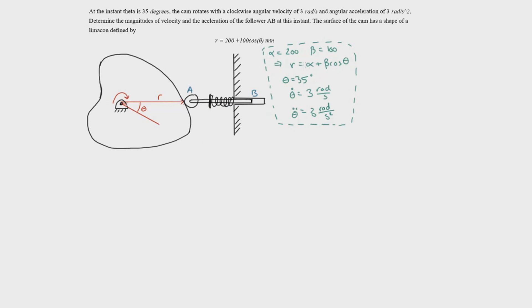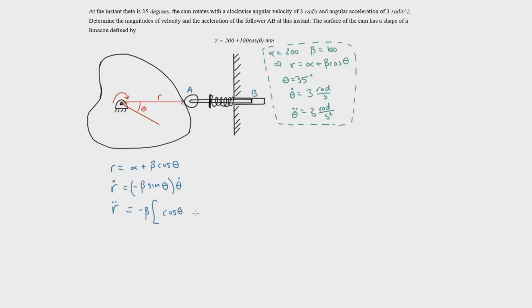I redefined R in a more general way by defining constants alpha and beta, so R equals alpha plus beta times cosine of theta. The time derivative of R is simply negative beta sine of theta times theta-dot. Taking the time derivative again for acceleration, I pull out the negative beta and apply the product rule between sine theta and theta-dot. The derivative of sine theta is cosine theta times theta-dot, giving theta-dot squared, plus theta-double-dot times sine theta.